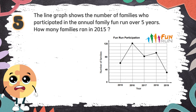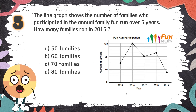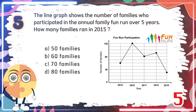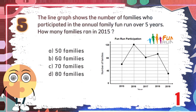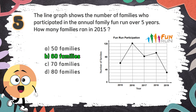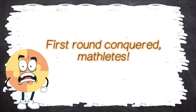Number 5. The line graph shows the number of families who participated in the annual family fund run over 5 years. How many families ran in 2015? The choices are A. 50 families, B. 60 families, C. 70 families, D. 80 families. The correct answer is B. 60 families.